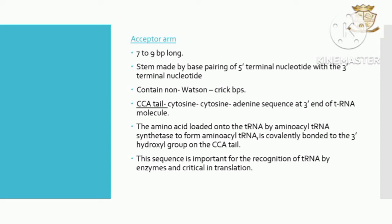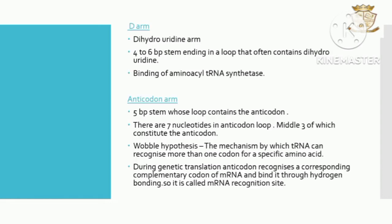The next is the D arm, also known as the dihydrouridine arm. It consists of a stem and a loop, with a four to six base pair stem ending in a loop that often contains dihydrouridine. The D loop is believed to be essential for the binding of aminoacyl-tRNA synthetase.